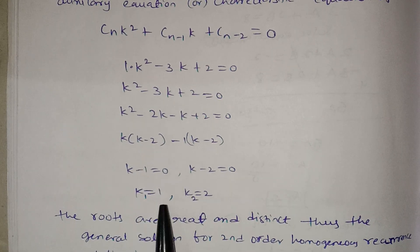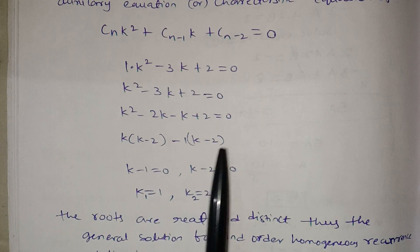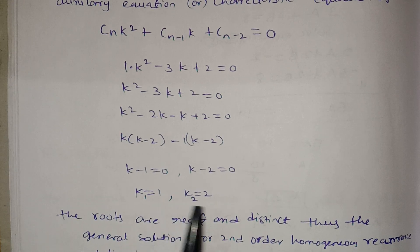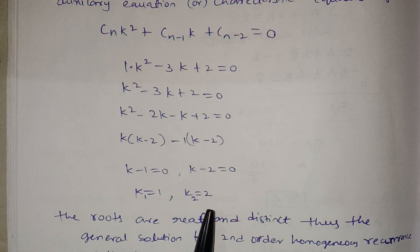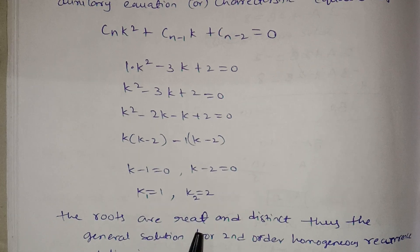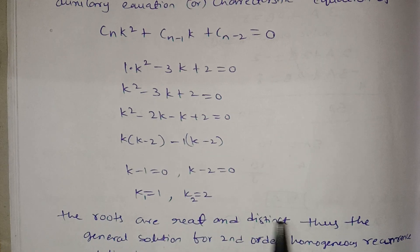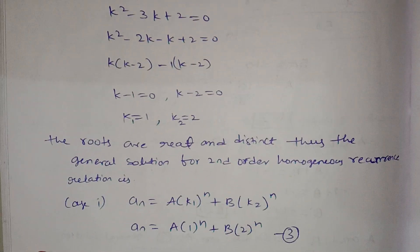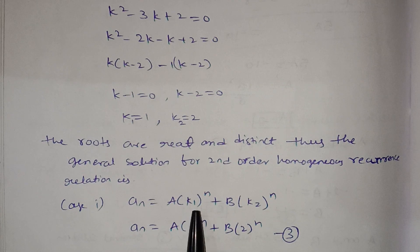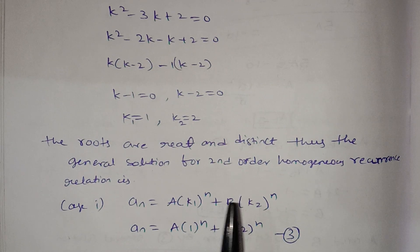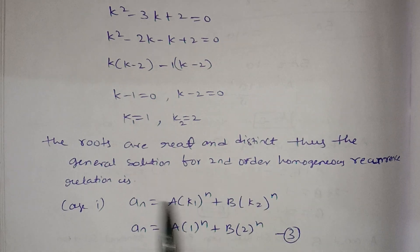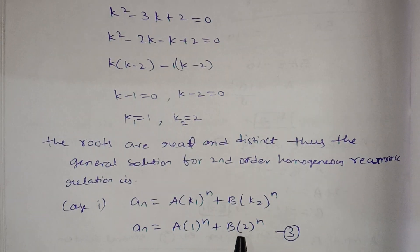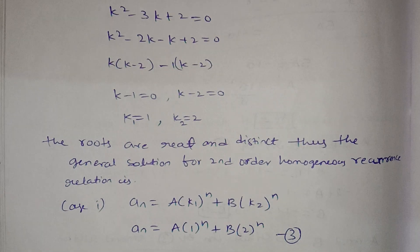K1 is equal to 1 and K2 is equal to 2. K1 and K2 are real and distinct, so this is Case 1: real and distinct roots. Thus the general solution for the second order homogeneous recurrence relation is: A(n) equals A into K1 whole power n plus B into K2 whole power n.